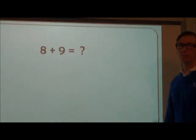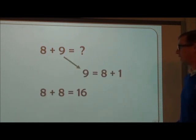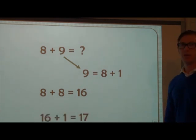Let's try this one. 8 plus 9. I know that 9 is a near double of 8. I know that 8 plus 1 equals 9. So I can do double 8 which is 16 and then add 1 to make 17.